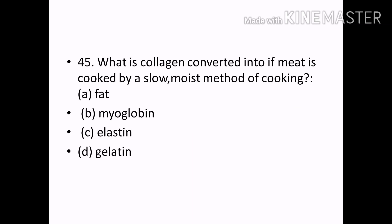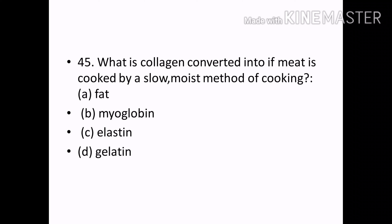What is collagen converted into if meat is cooked by slow moist method of cooking? Options — Fat, Myoglobin, Elastin, Gelatin. Correct answer: Option D — Gelatin.